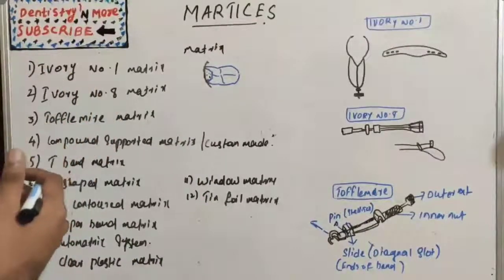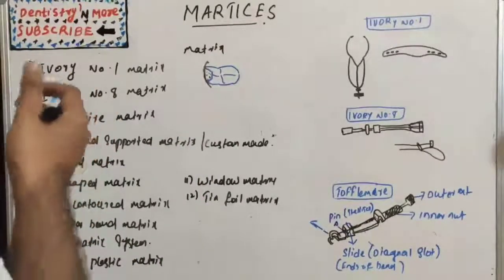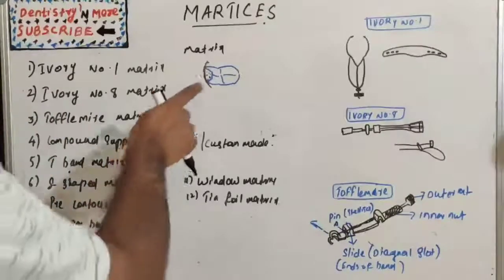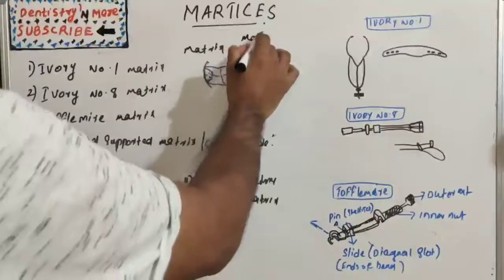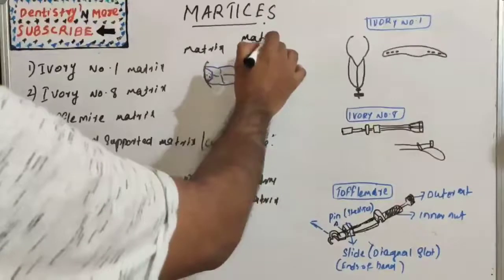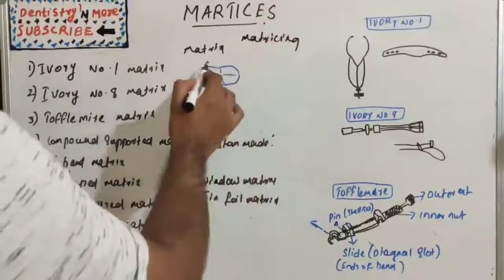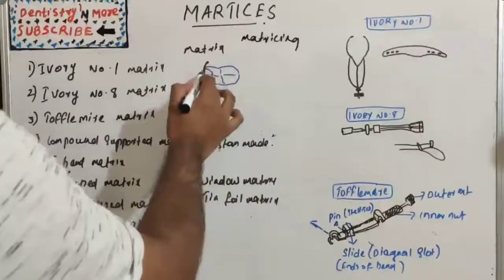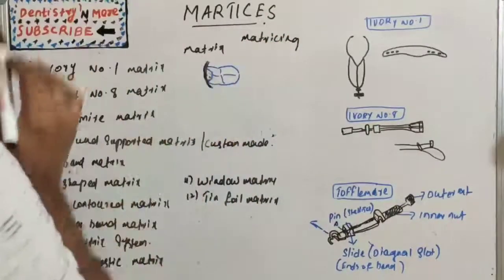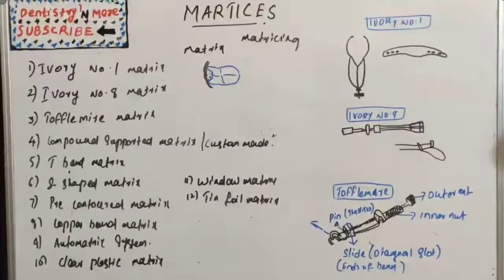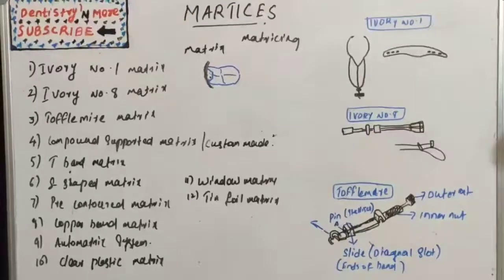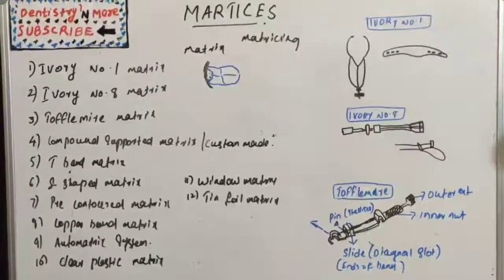A matrix is a device used during restorative procedures to hold the plastic restorative material within the tooth while it is setting. This process is known as matrixing and this device is known as matrices. So what are the ideal requirements of a matrix?